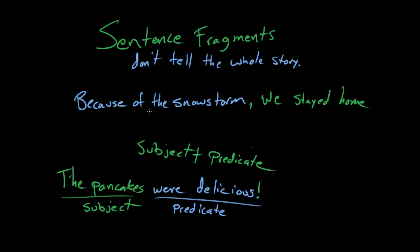We've got this sentence — this independent clause — "we stayed home from school," and that's a subject and a predicate. And if it were just "stayed home from school," period, that wouldn't be a sentence. And if it were just "we," period, that also wouldn't be a sentence. And if it were just "because of the snowstorm," period, that wouldn't be a sentence — it doesn't have enough support to stand on its own. But altogether, "because of the snowstorm, we stayed home from school" — that is a sentence.